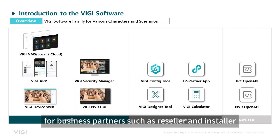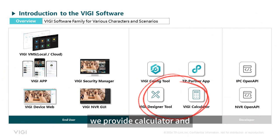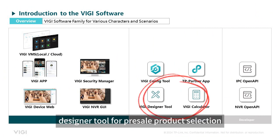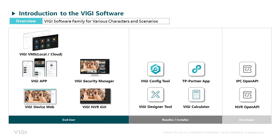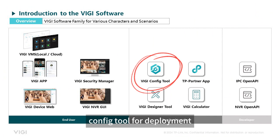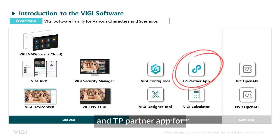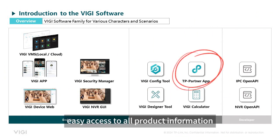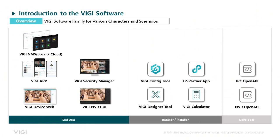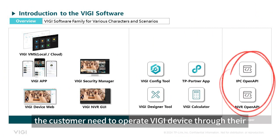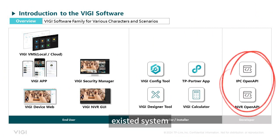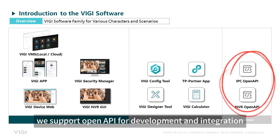For business partners such as resellers and installers, we provide a calculator and designer tool for pre-sale product selection and project design, a config tool for deployment, and the TP Partner app for easy access to all product information, promotions, and marketing handouts. For third-party integration — for example, if a customer needs to operate VG devices through their existing system — we support OpenAPI for development and integration.